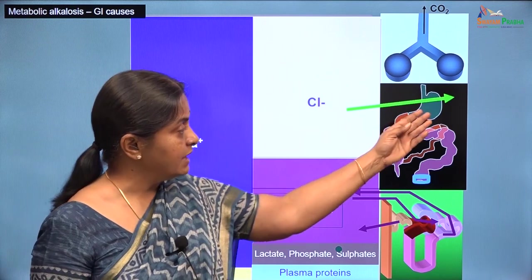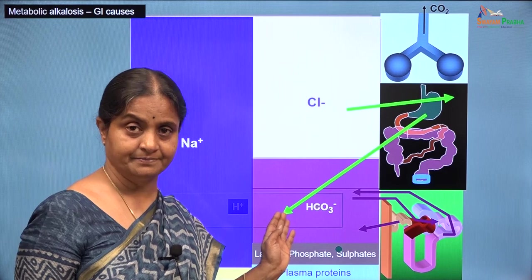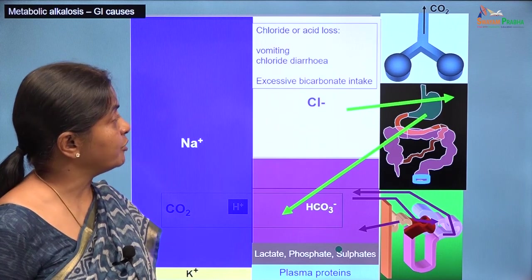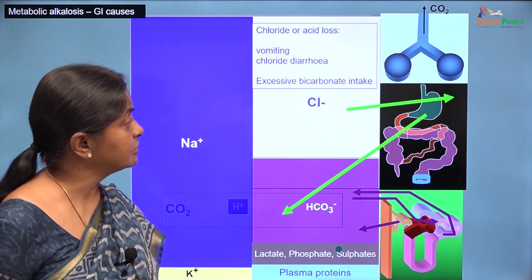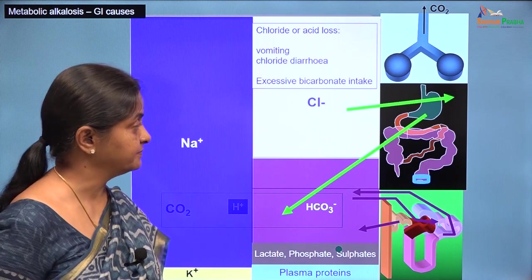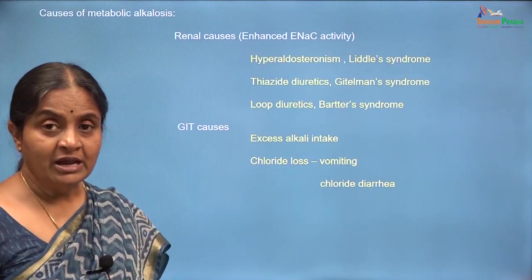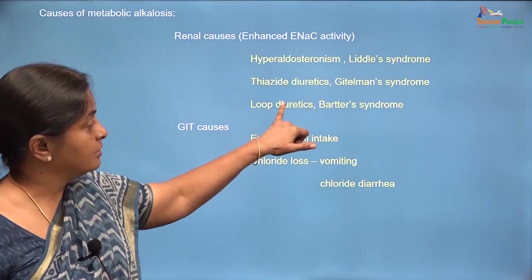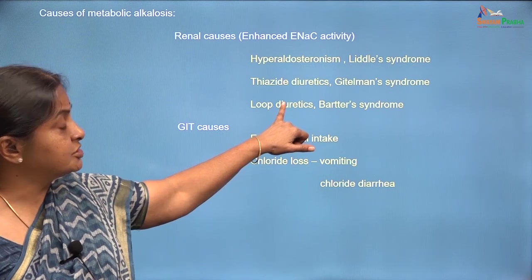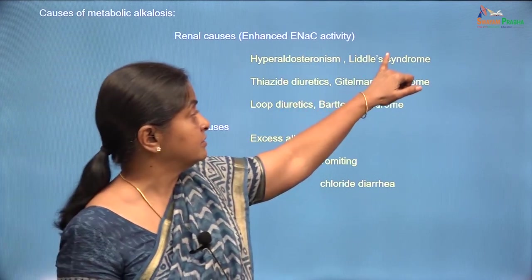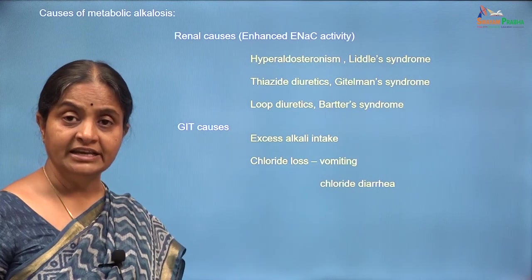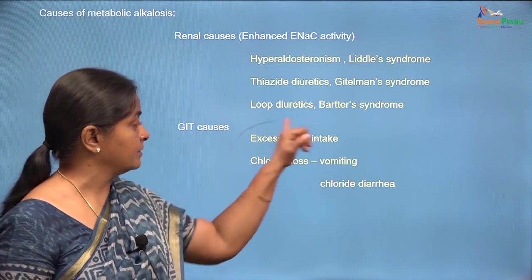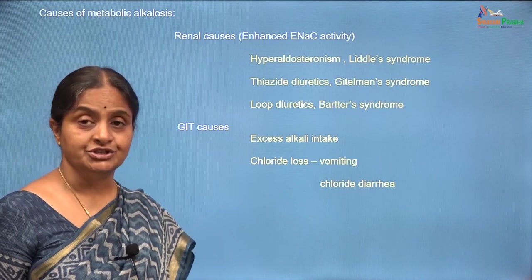There can also be an excess intake of bicarbonate per se. So these are gastrointestinal causes of metabolic alkalosis: vomiting, chloride diarrhea, and excessive bicarbonate intake. We now have 9 causes of metabolic alkalosis listed — 3 non-genetic conditions with increased ENAC activity, 3 genetic conditions all leading to increased reabsorption of sodium via epithelial sodium channels, and 3 GIT conditions.